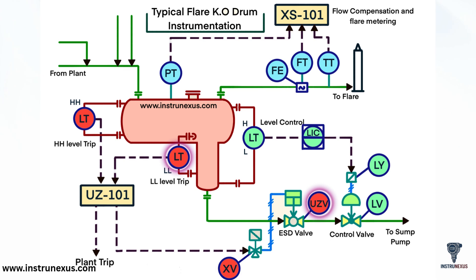In this P&ID, green lines show process flow, purple dotted lines represent electrical signals, and blue dashed lines indicate pneumatic control air.